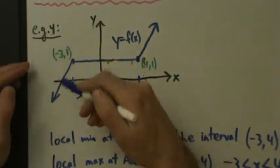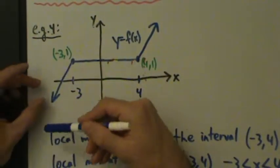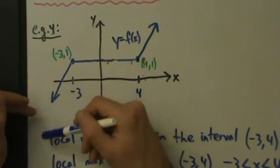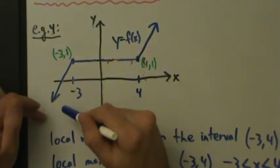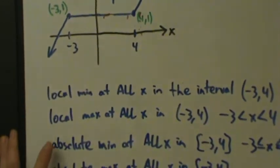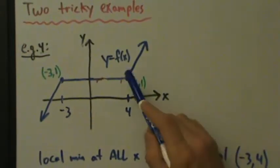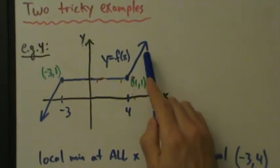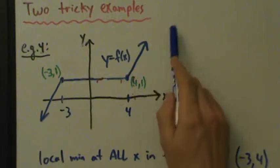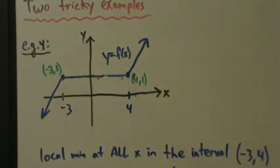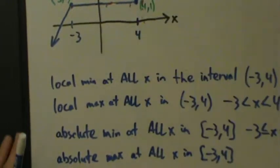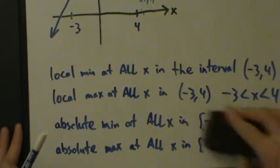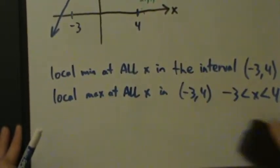The function keeps shooting off infinitely far down, so no matter how small of a y value you have, you can always find a smaller one — so there's no absolute min. Likewise, the function goes infinitely far up, so no matter how large a y value you find, you can always find a larger one. So just by adding these two pieces, there's no absolute min and no absolute max — this function has no absolute extrema.